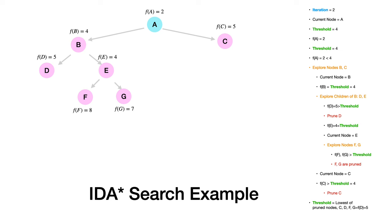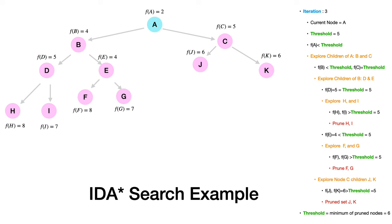In the second iteration, the pruned nodes were D, F, G, and C with F(n) values 5, 8, 7, and 5. Among these, the lowest is 5, so the threshold for iteration 3 is 5. We once again start from node A; F(A)=2 and children B and C both have F(n) values less than or equal to 5, so we pursue both.